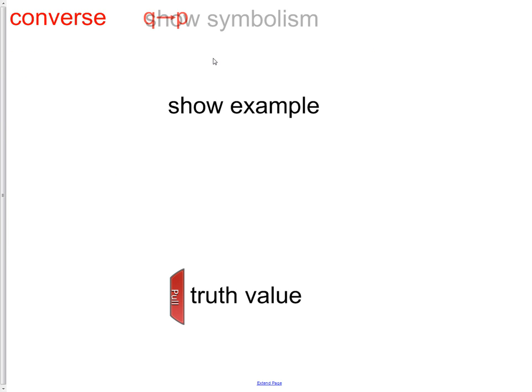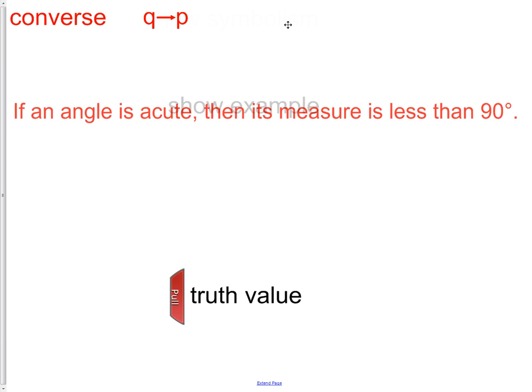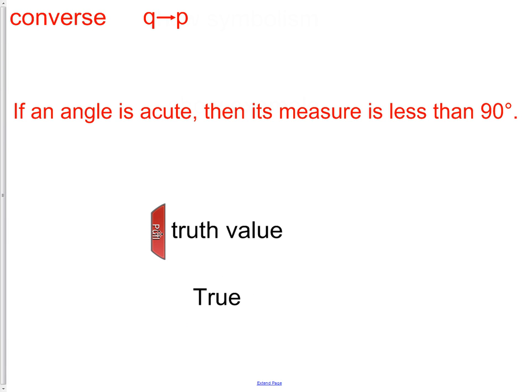Converse. If you remember, from the inverse we had the P pointing at the Q. For the converse, we flip those two around. We take the conclusion and we switch its place with the hypothesis. Our statement then becomes if an angle is acute, then its measure is less than 90. This one also happens to be true.